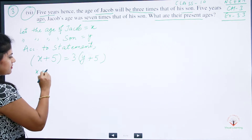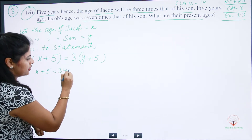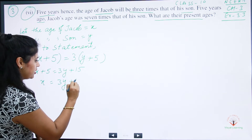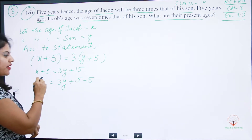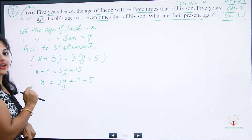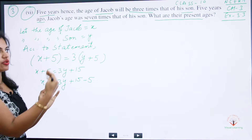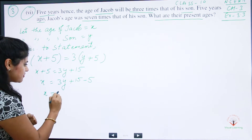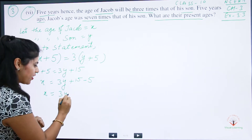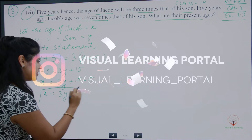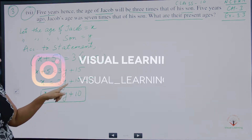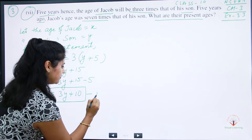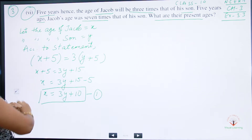Opening the bracket: x + 5 = 3y + 15. So x = 3y + 15 - 5, which gives x = 3y + 10. This is Equation Number 1. We will use this value of x to substitute into the second equation.